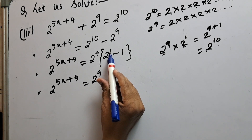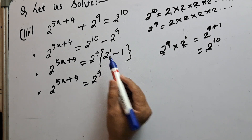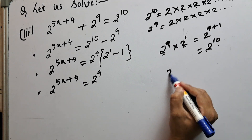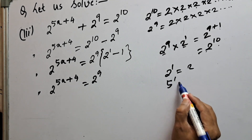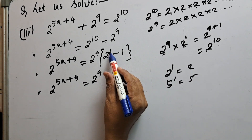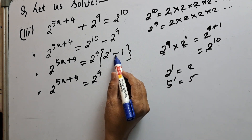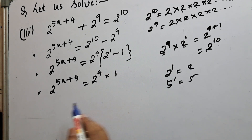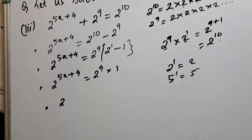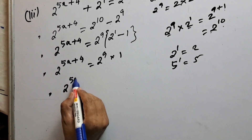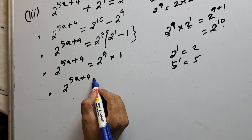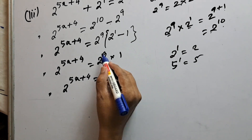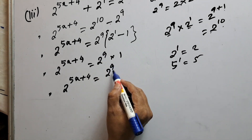Now we have 2 to the power 5x+4 equal to 2 to the power 9. Any number raised to power 1 is the same number, so 2 to the power 1 is 2. And 2 to the power 9 times 1 is 2 to the power 9. The bases 2 and 2 are the same, so their powers must also be equal.